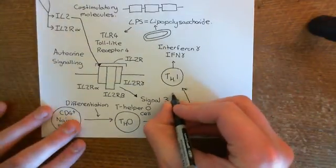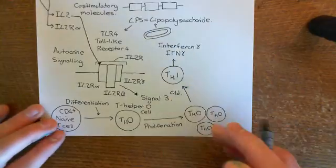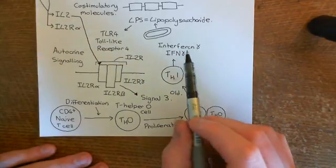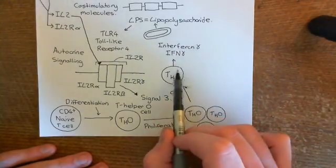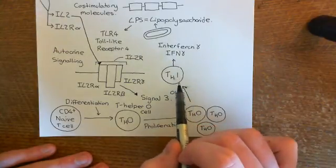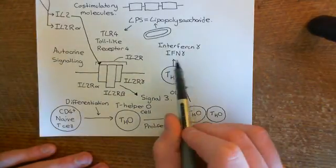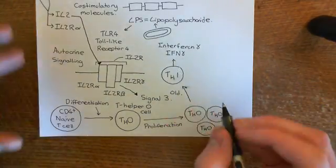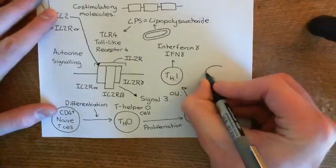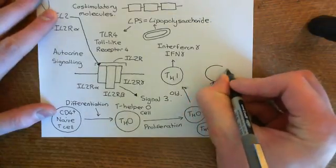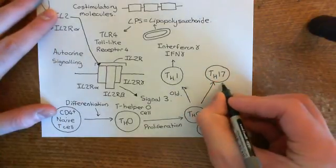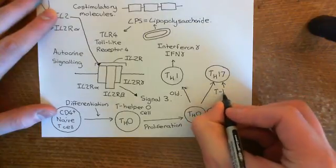This is the old story, because when you actually look at the synovial joints that are inflamed in rheumatoid arthritis, you find very low levels of interferon gamma and very low levels of T-Helper 1 cells. A few of these will differentiate into T-Helper 1 cells and release interferon gamma, but the majority of these T-Helper nought cells seem to differentiate into T-Helper 17 cells.